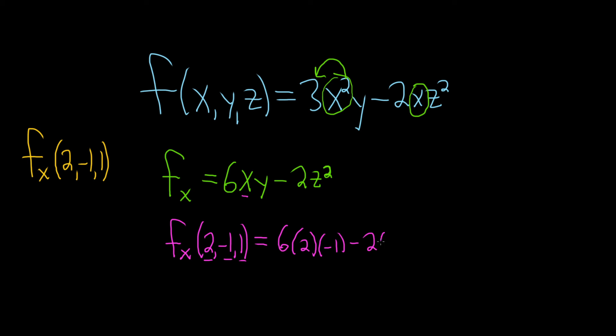Minus 2, and then z squared, so z is 1. So x is 2, y is negative 1, z is 1. Looks good.